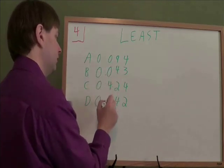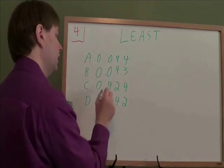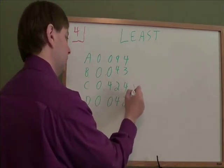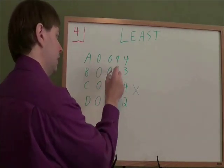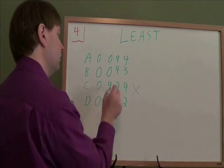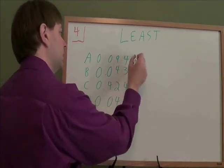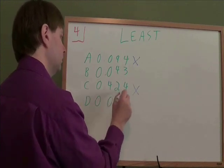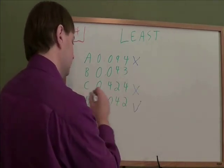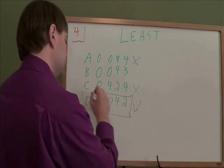So these three are tied for least, A, B, and D. And C can't be it, 4 is too big. So then we go to the next place. We have 9, 4, and 4. Who's the least of those? The 4, which means it can't be the 9. And then we just go to the next place, which is the least, 2 or 3? 2. Our answer is D.